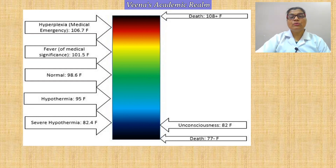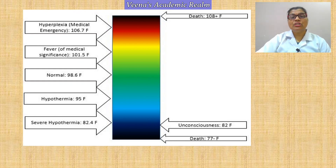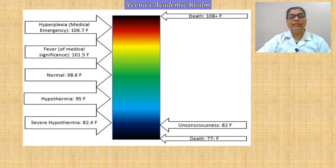This was about the types and abnormalities of body temperature. In the next session we will see completely the care of a patient with fever. Today's session covered mainly the abnormalities of fever — approximately 15 to 16 types — and we also reviewed the chart showing how to identify different categories of body temperature, how to treat them, and what constitutes an emergency.